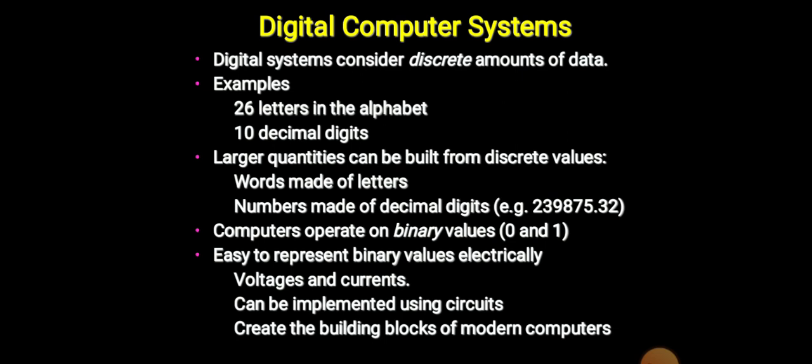Digital computer systems consider discrete amounts of data. Examples: 26 letters in the alphabet, 10 decimal digits. Larger quantities can be built up from discrete values. Words made of letters and numbers made of decimal digits.